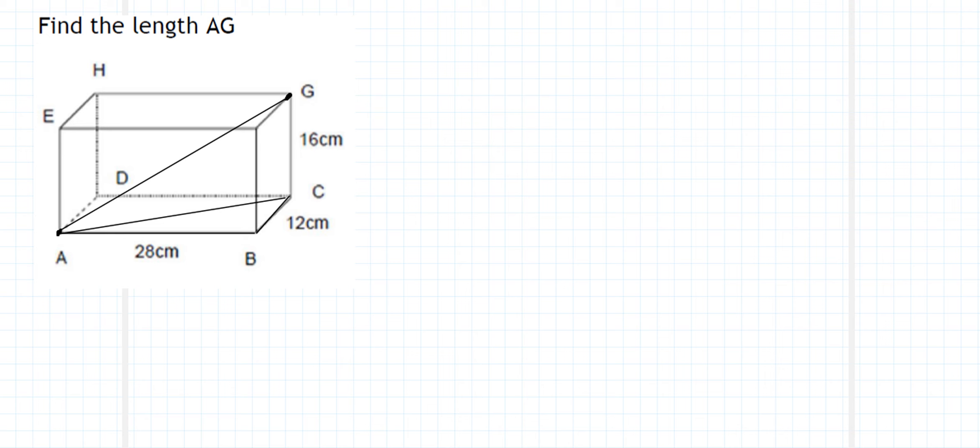And then we're going to use that length of AC. And we're going to use the height of the rectangular prism here, C to G. And we're going to be able to use that to work out the length A to G. So in essence, we're going to be working out Pythagoras using two triangles.